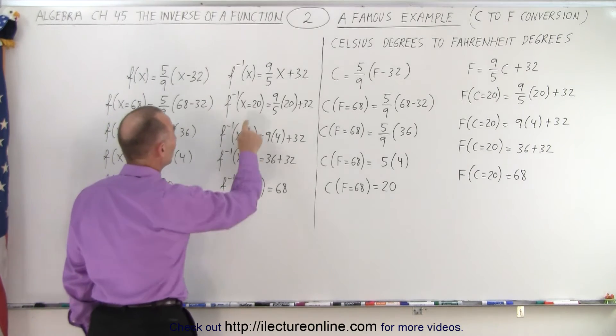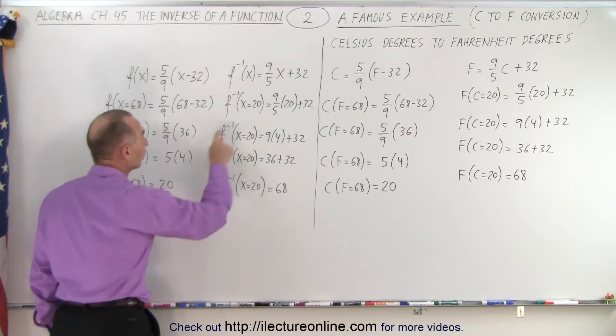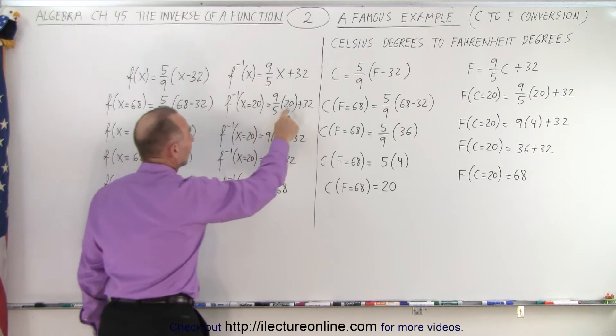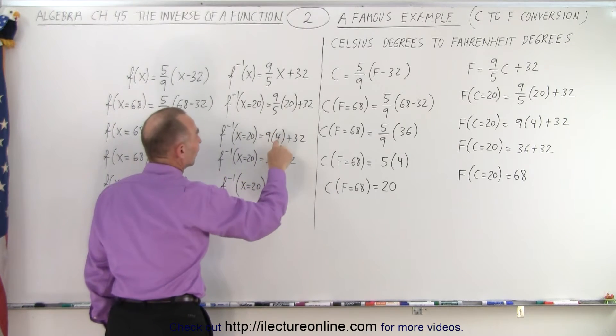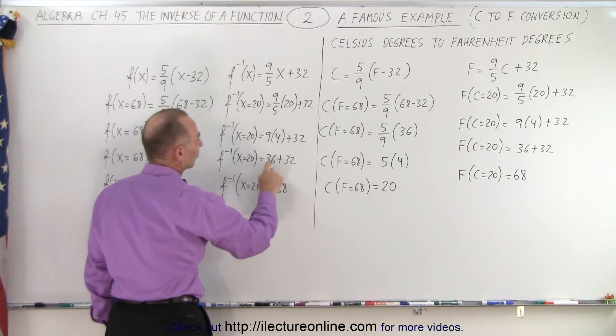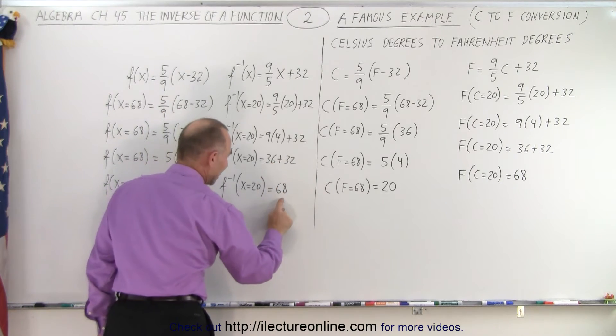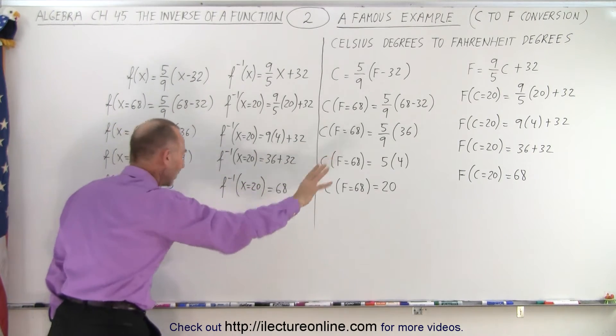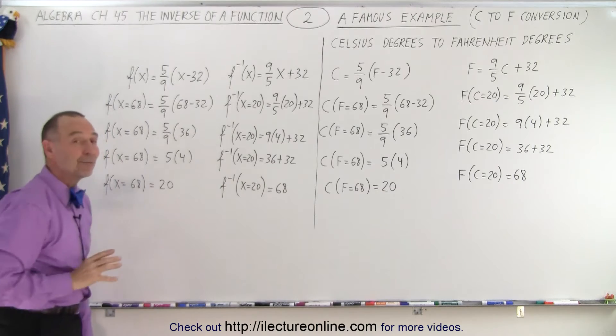So what we do now is we plug in the value obtained here for x. x equals 20. Here we get 20 divided by 5 is 4. 4 times 9 is 36. 36 plus 32. Again we get 68, just like what we did there. We get the very same result here.